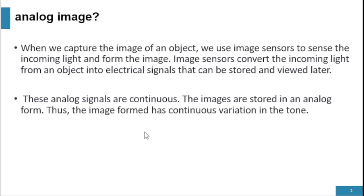Images have become a very important part of our lives — we tend to take photographs of every occasion to remember them. But the pictures that we take are mostly analog images. When we capture the image of an object, we use image sensors to sense the incoming light and form the image. Image sensors convert the incoming light from an object into electrical signals that can be stored and viewed later. These analog signals are continuous, and the images are stored in an analog form, so the image formed has continuous variation in tone.